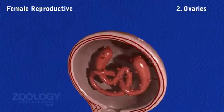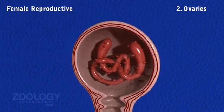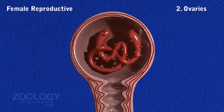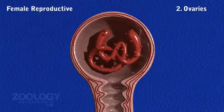Ovaries: Each ovisac is filled with coelomic fluid, in which a minute, delicate, coiled, thread-like and nucleated ovary floats, from which ova are budded off.